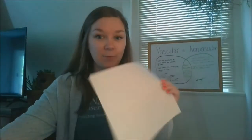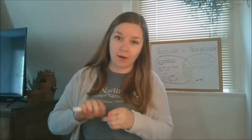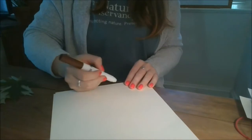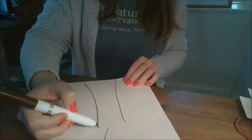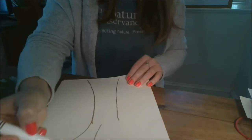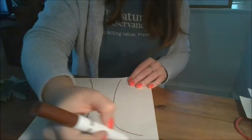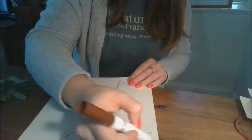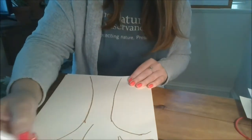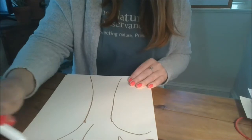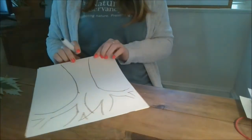You are going to have a plain white piece of paper and you are going to draw a tree trunk. You can draw some branches if you want — it's totally up to you how fancy you get with your tree. Got some nice branches going on there.